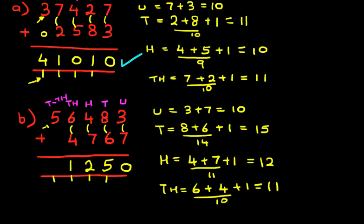And lastly, we've got the ten thousands. 5 plus 0 plus the 1 we've carried over. So 5 plus 1 is 6. And that is our answer. 61,250. Nice big tick.